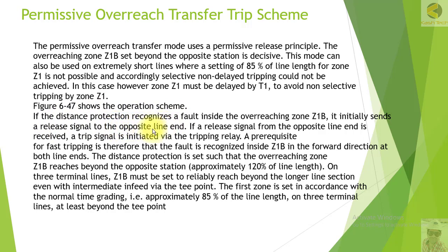If the distance protection recognizes a fault inside overreaching zone Z1B, it initiates a release signal to the opposite line end. If a release signal from the opposite line end is received, a trip signal is initiated via the tripping relay. A prerequisite for fast tripping is therefore that the fault is recognized inside Z1B in the forward direction at both line ends. The distance protection is set such that overreaching zone Z1B reaches beyond the opposite station, approximately 120% of the line length.